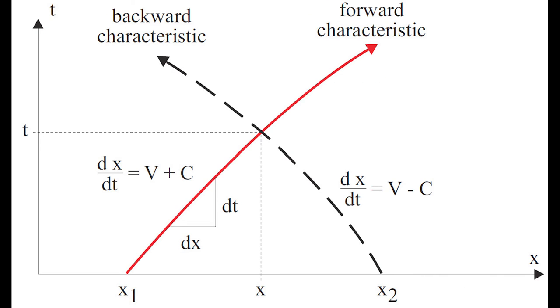In the XT diagram, with X launch in all directions on the horizontal axis and T time on the vertical axis, equation 1 is valid anywhere along the red line, the forward characteristic, and equation 2 is valid everywhere along the black dashed line, which is a backward characteristic.